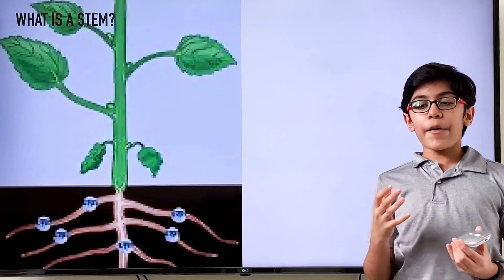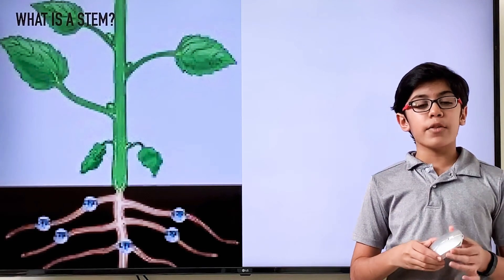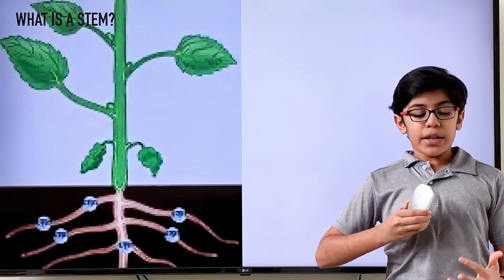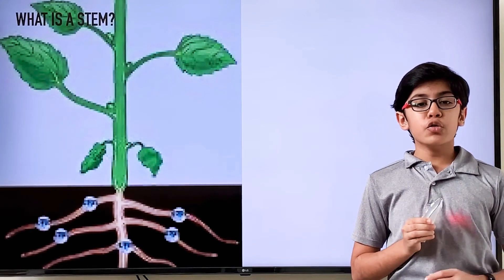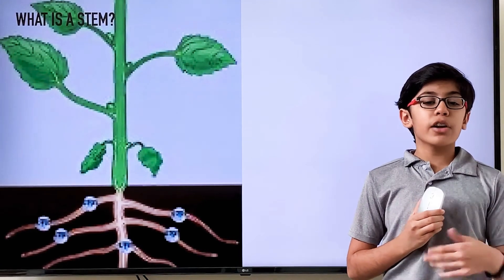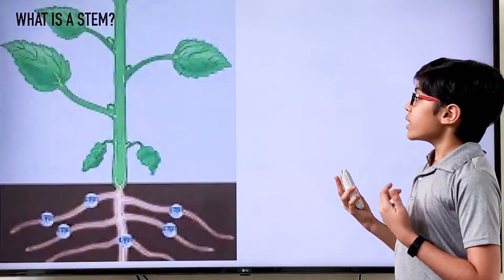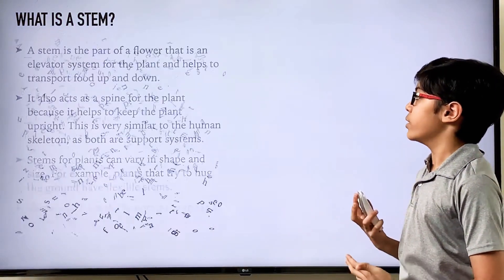Now, the stem also has a very advanced part inside of it, which is kind of an elevator system that relies on suction to get food up and gravity to get food down. This is why stems are really important.